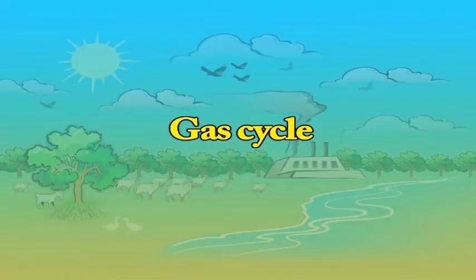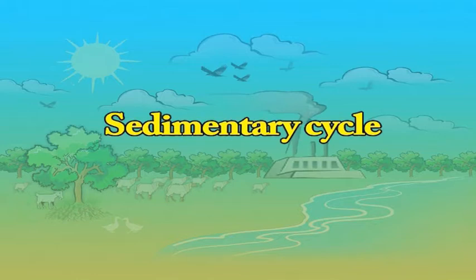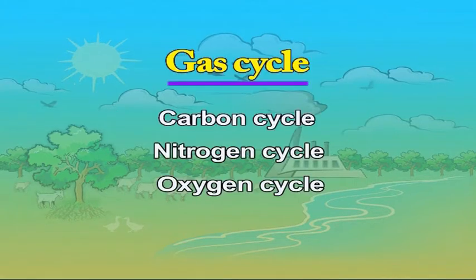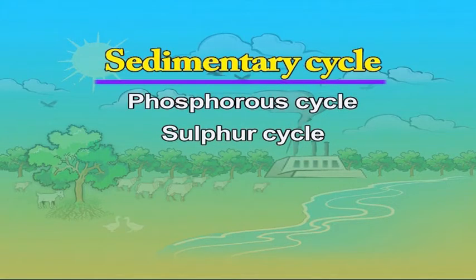In a gas cycle, elements move through the atmosphere. In a sedimentary cycle, elements move from land to water to sediment. Carbon cycle, nitrogen cycle and oxygen cycle are examples of gas cycles, whereas phosphorus cycle and sulfur cycle are examples of sedimentary cycles.